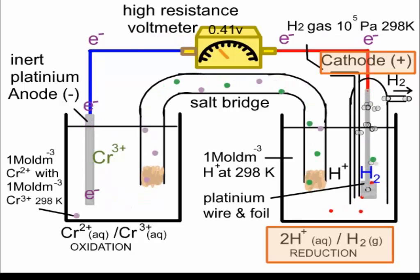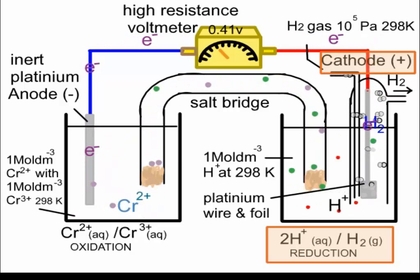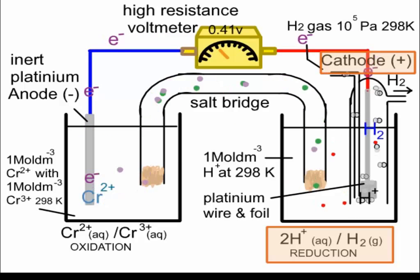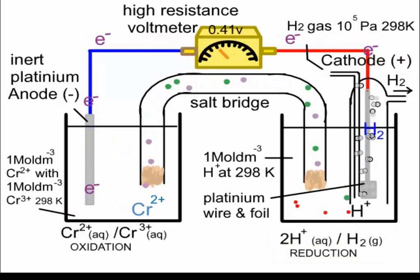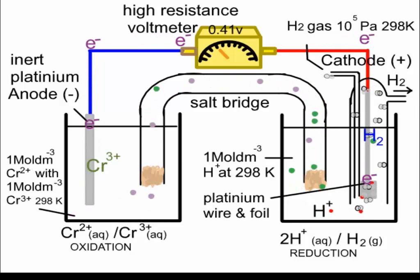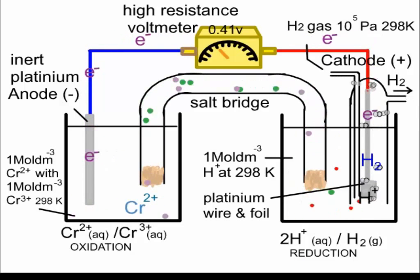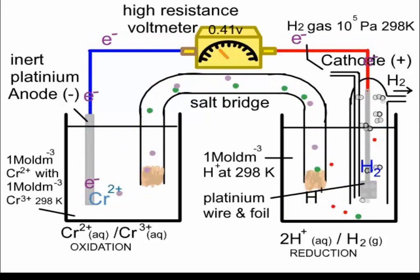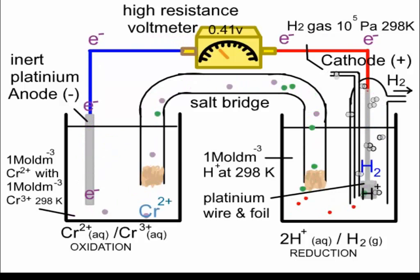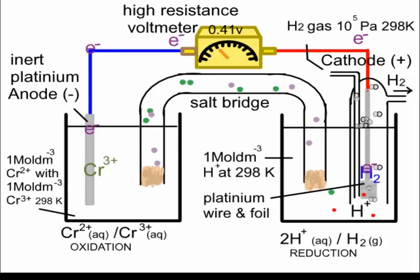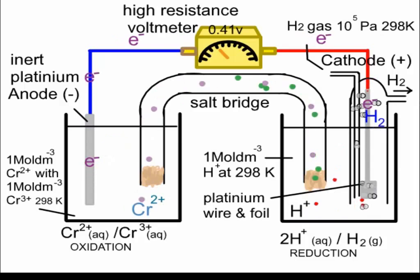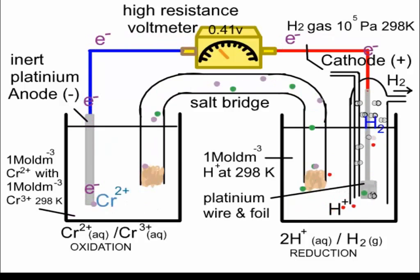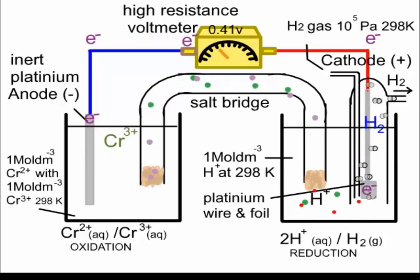The role of the salt bridge is to counterbalance: (a) the build-up of positive charge on the left, and (b) the drop in positive charge on the right. Negative ions such as chloride or nitrate ions move from the salt bridge into the left-hand half cell to counterbalance the build-up of positive charge, while positive ions — sodium or potassium ions — move into the right-hand half cell to counterbalance the depletion of hydrogen ions.